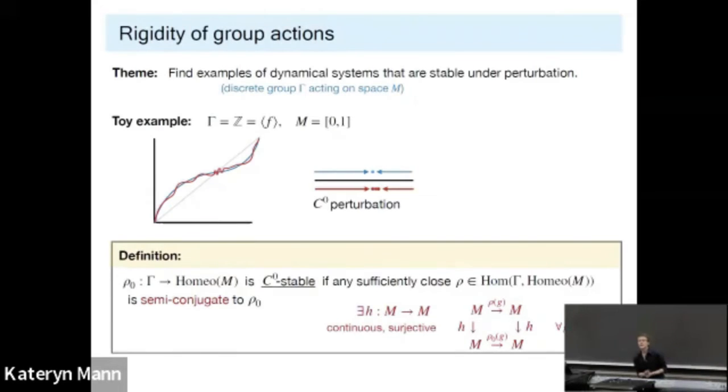As you notice, this definition is inherently asymmetric. The perturbation has to sit above the original. This forces a perturbation to retain at least as much complexity or dynamical complexity or information as the original. For instance, if you take an individual element, the entropy of it, the topological entropy, could only go up. And any other notion of complexity, similarly. So you might think from my picture that this is easy to find behavior. But as soon as your group gets remotely complicated, this is a very difficult question to even find examples.